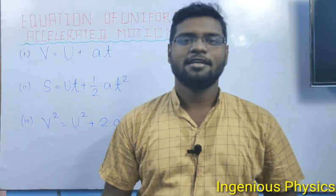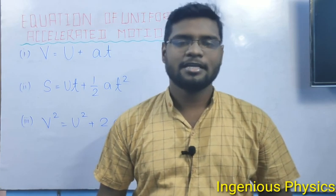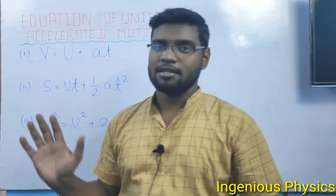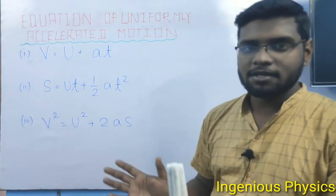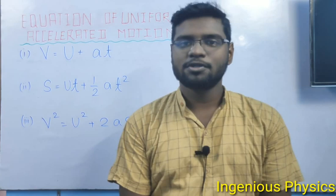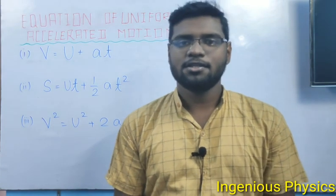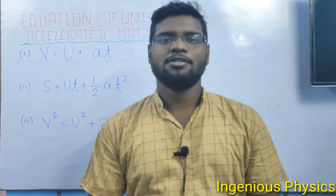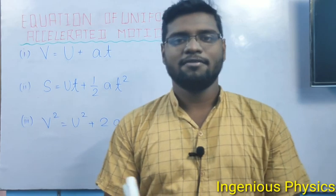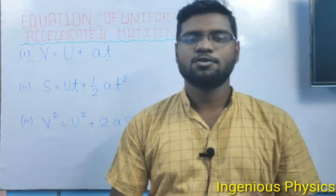Welcome to Ingenious Physics channel. Today we will discuss the equations for uniformly accelerated motion. There are three equations: the first one is V equals U plus AT, the second one is S equals UT plus half AT squared, and the third one is V squared equals U squared plus 2AS. We will derive these three equations in this video.